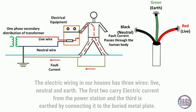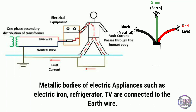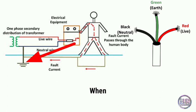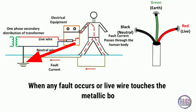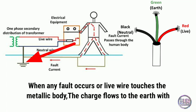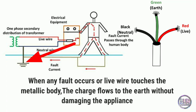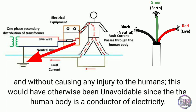Metallic bodies of electrical appliances such as electric iron, refrigerator, and TV are connected to the earth wire. When any fault occurs or a live wire touches the metallic body, the charge flows to the earth without damaging the appliances and without causing any injury to humans — this would have otherwise been unavoidable since the human body is a conductor of electricity. I hope you understand the difference between an insulator and a conductor.